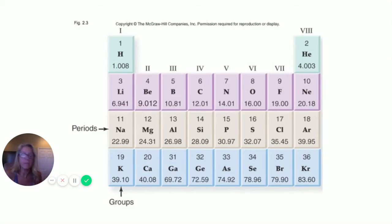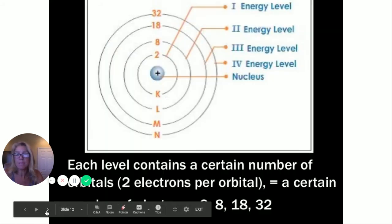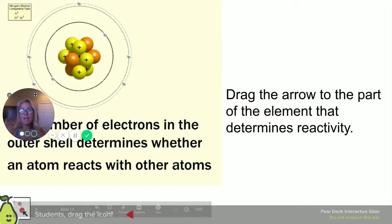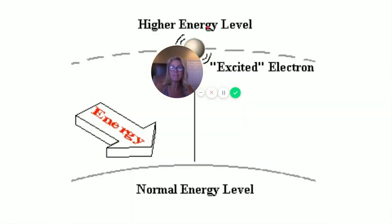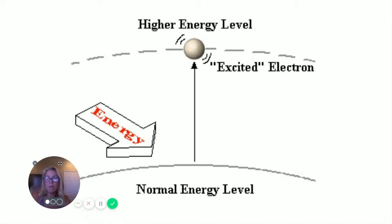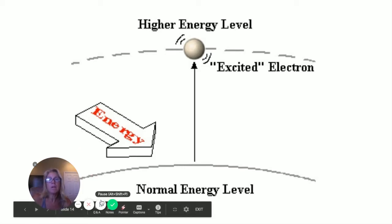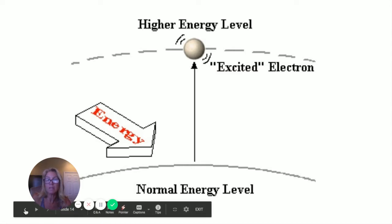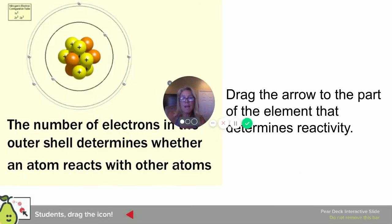Each energy level contains a certain number of orbitals: two electrons per orbital, with specific totals — 2, 8, 18, 32. When electrons jump to higher energy levels, they do so because they received energy. They gain that energy and jump up; as they come back down to a lower energy level they give off energy. We'll talk about that specifically when we discuss photosynthesis.